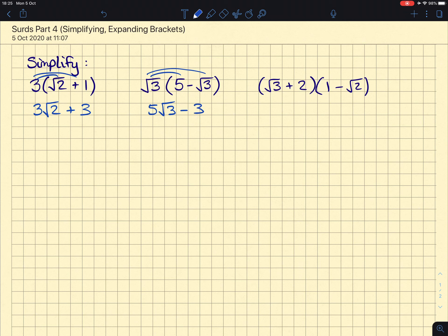And then with double brackets, remember everything in one bracket has to multiply everything in the other. So we'll start off with a root 3 times a 1, giving us a single root 3. A root 3 times a root 2, a minus root 2 even, which will give us minus root 6. We then have a 2 times a 1, a positive 2, and a 2 times a negative root 2, giving us minus 2 root 2.